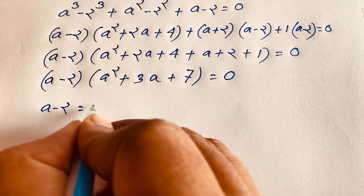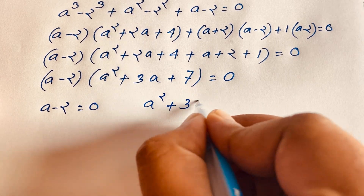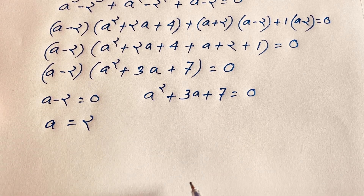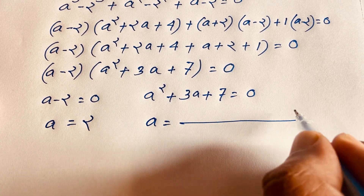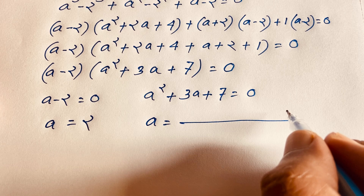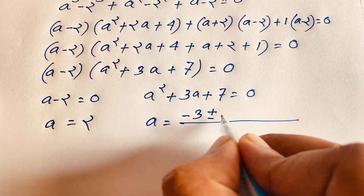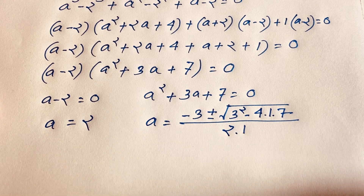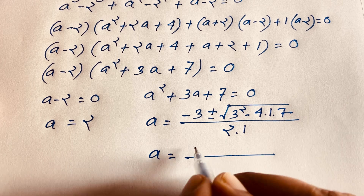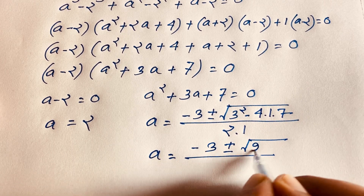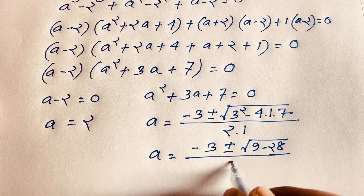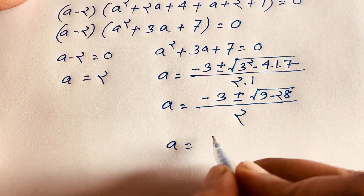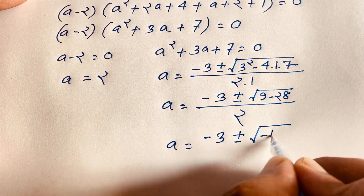This gives us two cases. Case 1: a minus 2 equals 0, so a equals 2. Case 2: a squared plus 3a plus 7 equals 0. Applying the quadratic formula with b equals 3, a-coefficient equals 1, c equals 7: a equals minus 3 plus or minus square root of (9 minus 28), all over 2, which gives a equals minus 3 plus or minus square root of minus 19, all over 2.